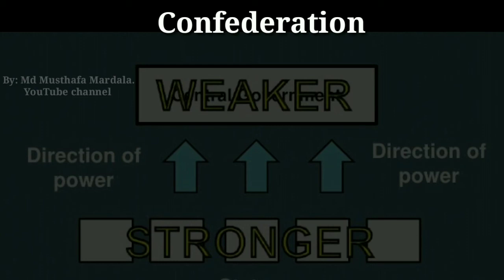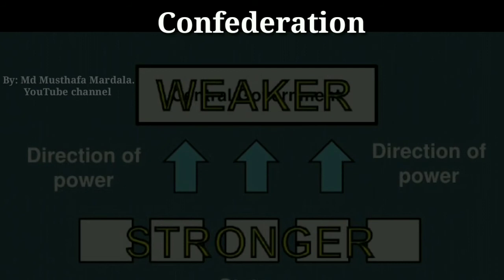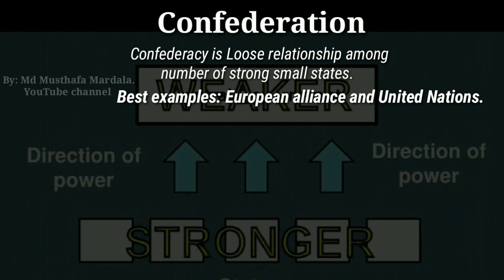If all types of governments are arranged in a row according to their centralization, the unitary form of government will occupy the seat at the beginning. On the other hand, confederation will occupy the seat at the end. This means a confederacy is a loose relationship among a number of smaller political units, where the vast majority of power rests with the local governments. In some cases a confederal government is little more than an alliance between independent states. The best examples of confederation are the European Union and the United Nations.